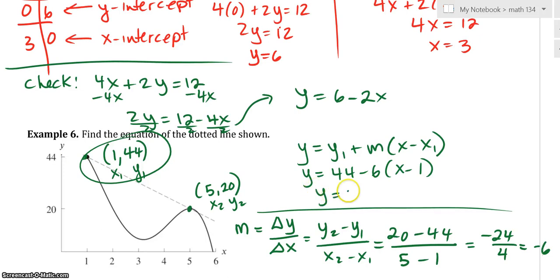And the x is 1. So it looks like it's going to be y = 44 - 6x + 6. Or, I'm really running out of room. 50. 8, 6 + 44 is 50. That would be the answer.